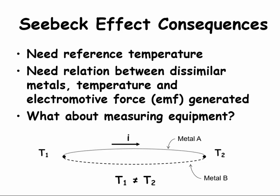The Seebeck effect has some consequences if we want to use the principle to measure an unknown temperature. We need to know one of the temperatures, which is called the reference temperature. In the old days, an ice bath at 0 degrees Celsius was used as the reference temperature because it was fairly easy to create. We also need to know the relation between the two dissimilar metals and the electromotive force generated. Electromotive force can be abbreviated as EMF. Finally, we need a way to measure the current.